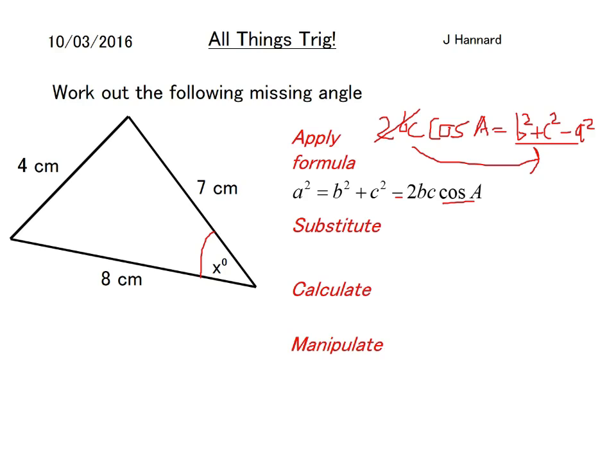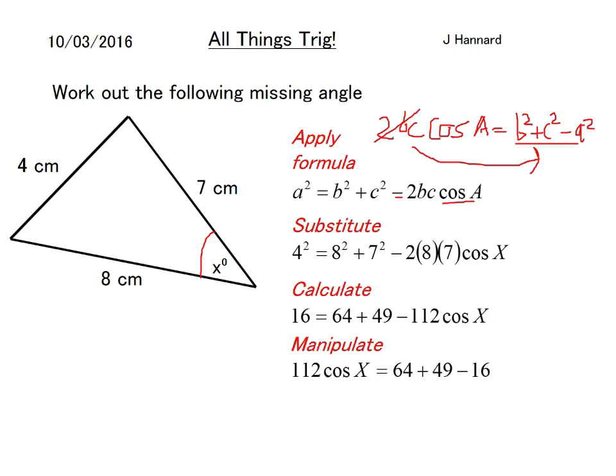Substitute. Calculate that with cos A on its own. Divide both sides by 112 and cos A equals that. Then do the shift cos of that to get about 30 degrees. You need to on your calculator shift and then cos, and you'll get about 30 degrees.